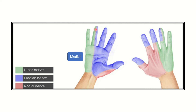On the medial side of the palm, we can see the distribution area of a nerve. This is the ulnar nerve, which supplies the medial one and a half fingers and that area. On the other hand, the lateral three and a half fingers are supplied by the median nerve.